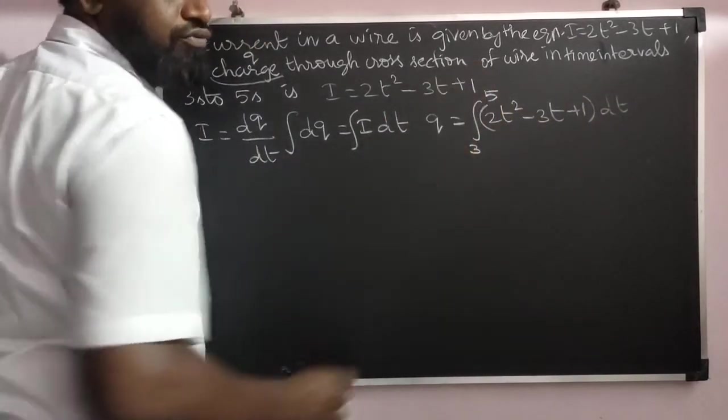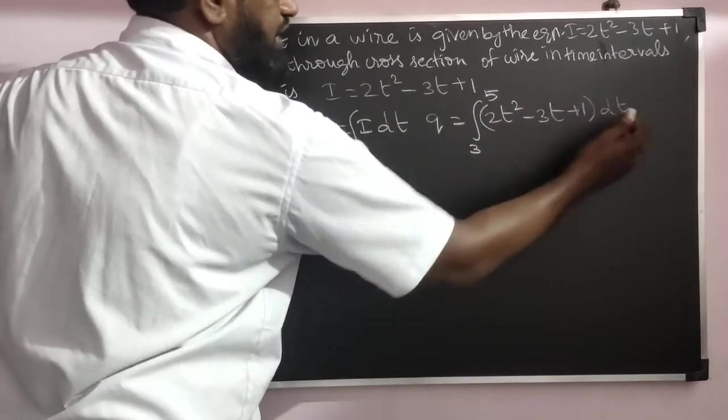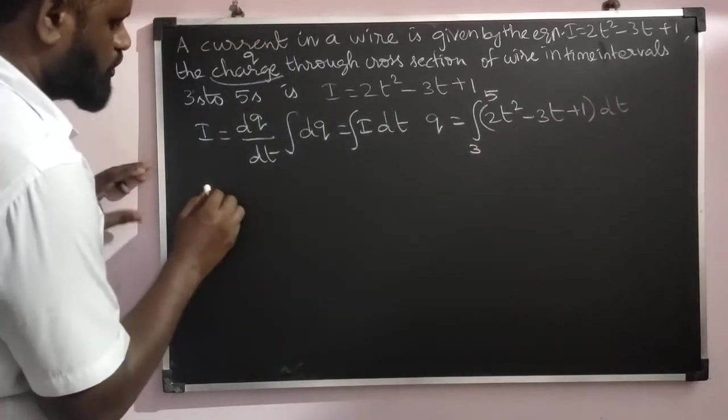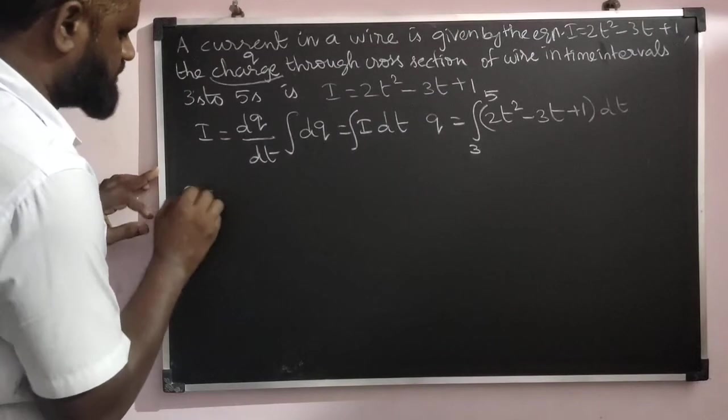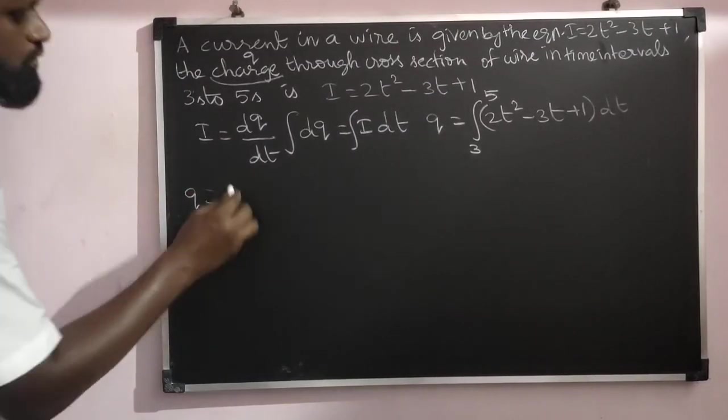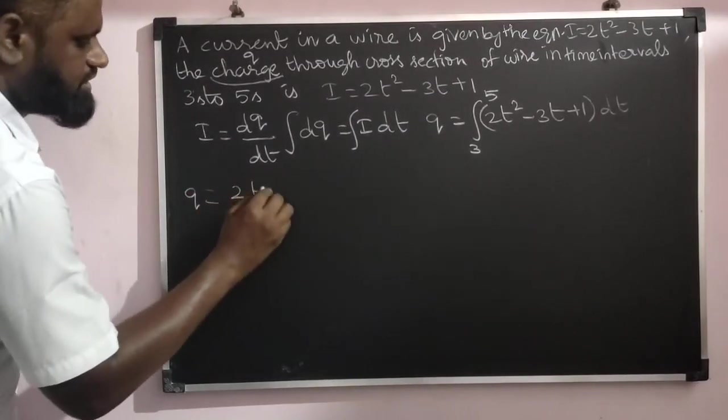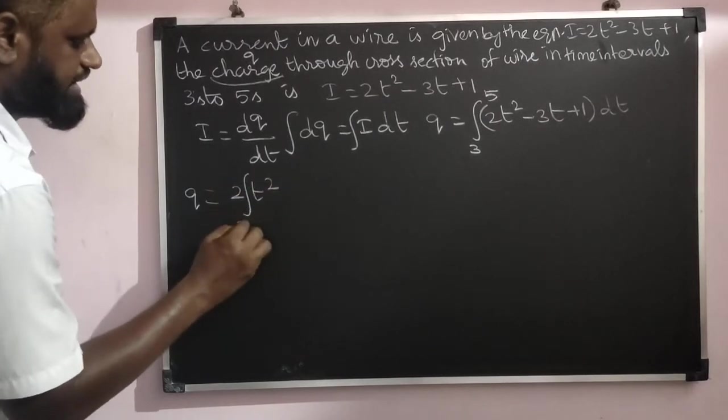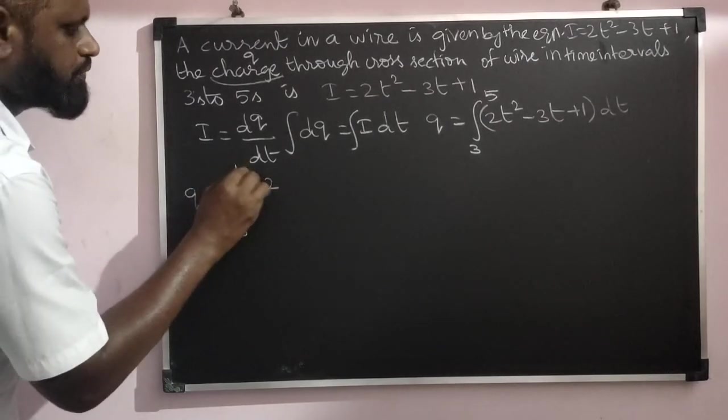From 3 seconds to 5 seconds, first we need to take the integration. So q = 2∫t² dt from 3 to 5.